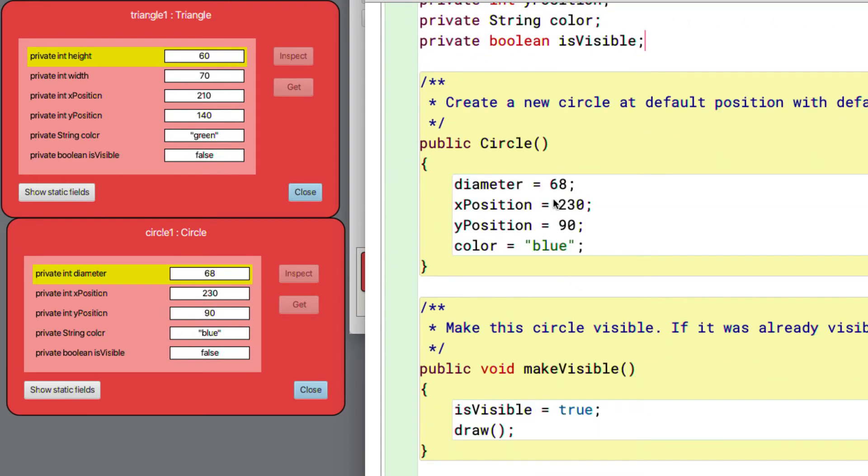if we look a little bit further down into what's called the constructor, the part of the source code that's responsible for initializing the state of a newly created circle, then we see 68, 230, 90, blue,